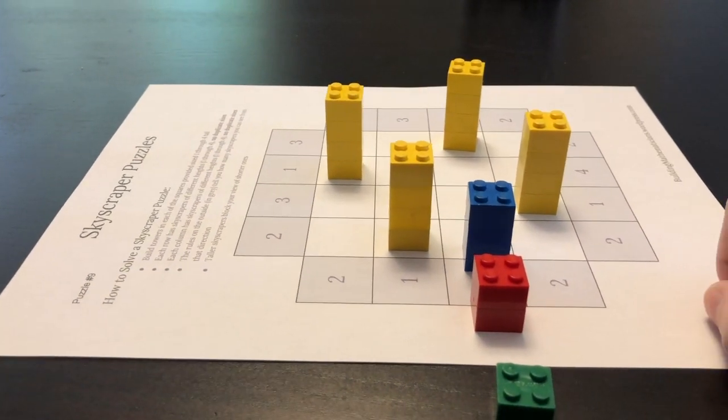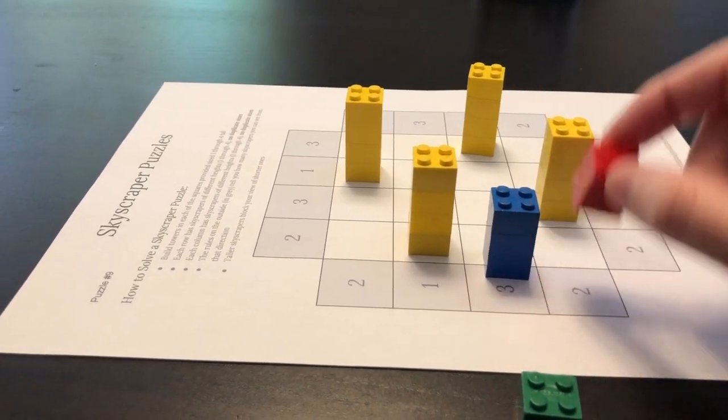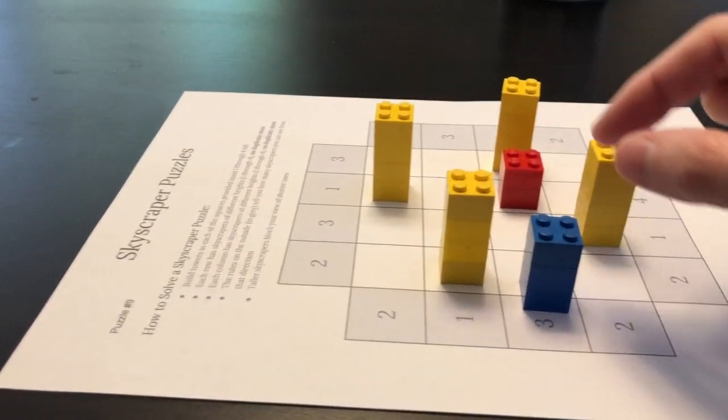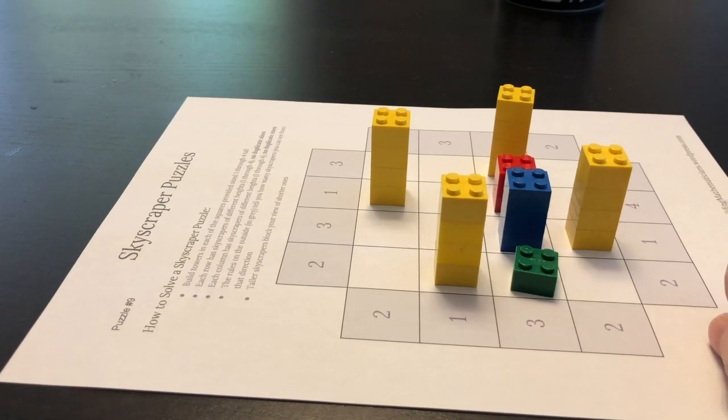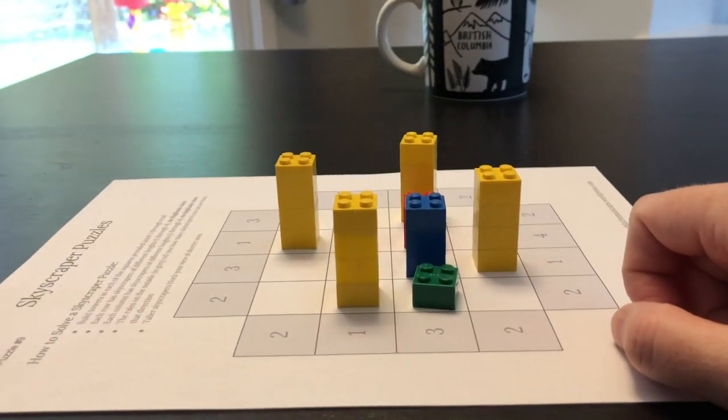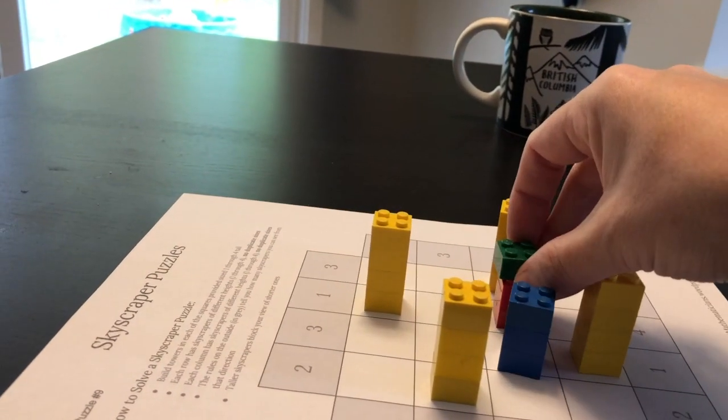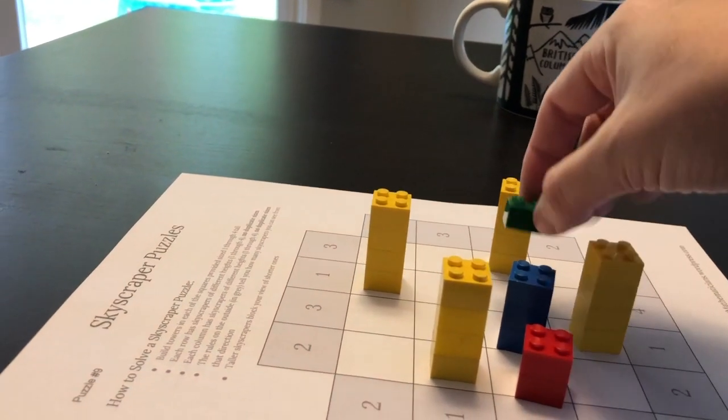I know in this row we still need a blue, red, and green. But you can only see three towers from that direction. So this could be an option. Or it could be this way.